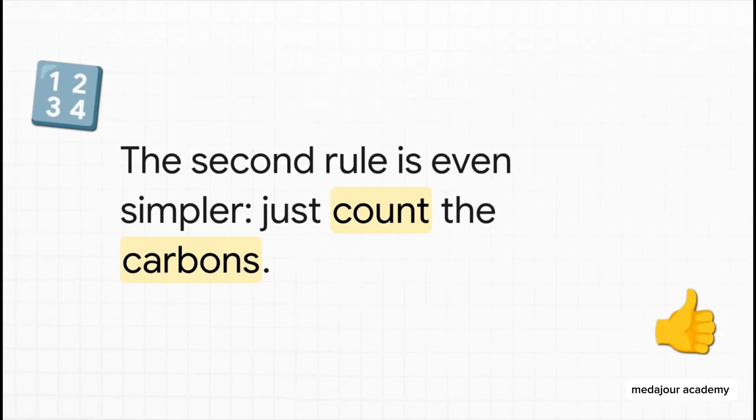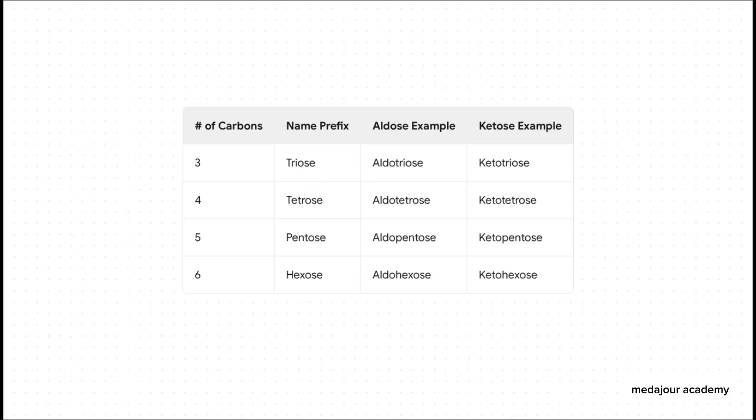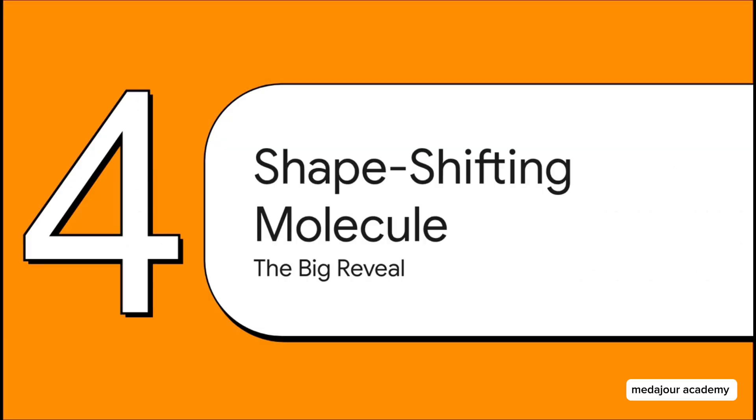Once you know if it's an aldose or a ketose, the second rule is even easier — you just count the carbons. You smush the two rules together to get a name. Take glucose, for example. It's got six carbons, which makes it a hexose. And its carbonyl group is at the end, which makes it an aldose. Put it together and you get aldohexose. It's a beautifully simple, logical system for naming the whole family.